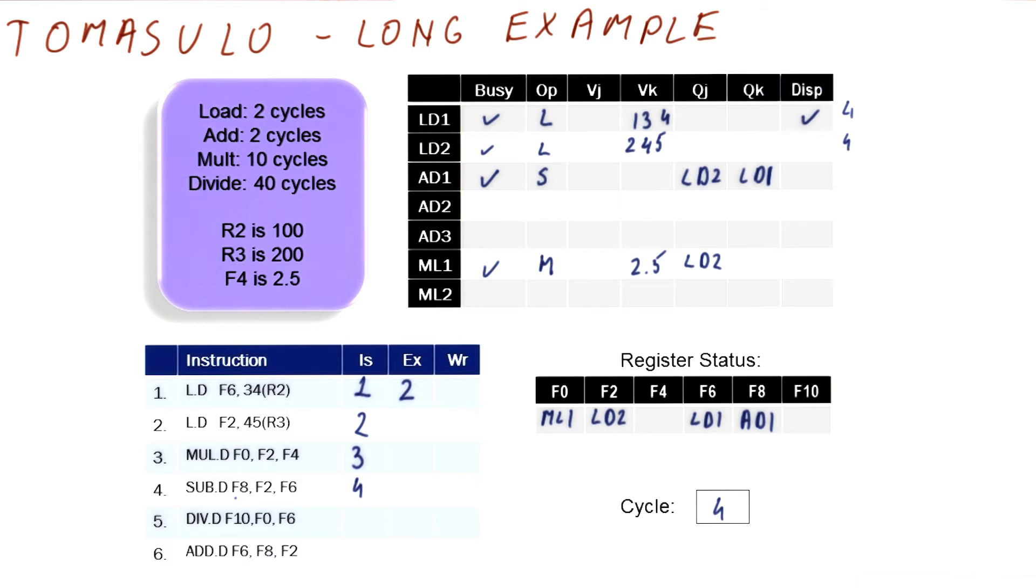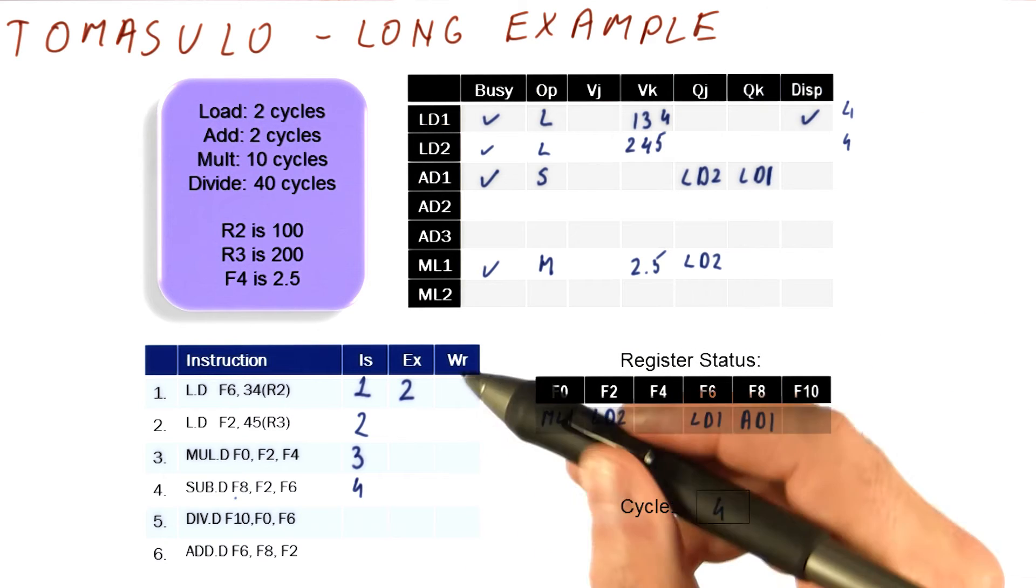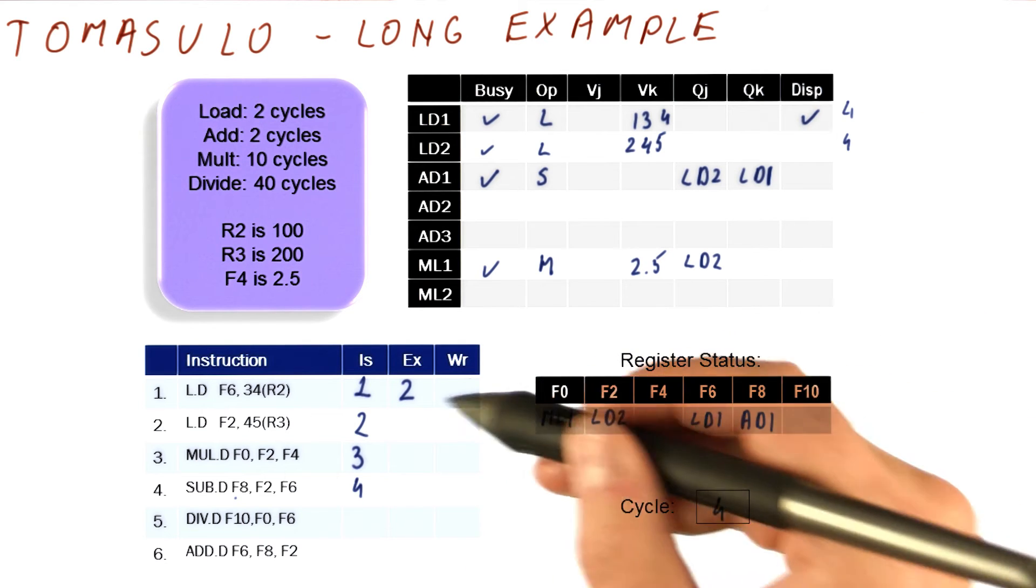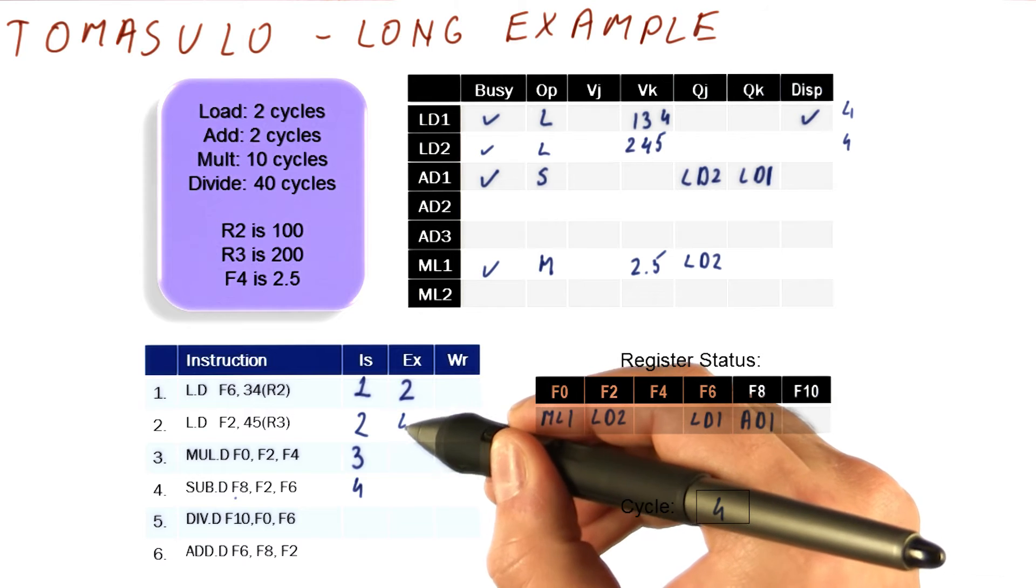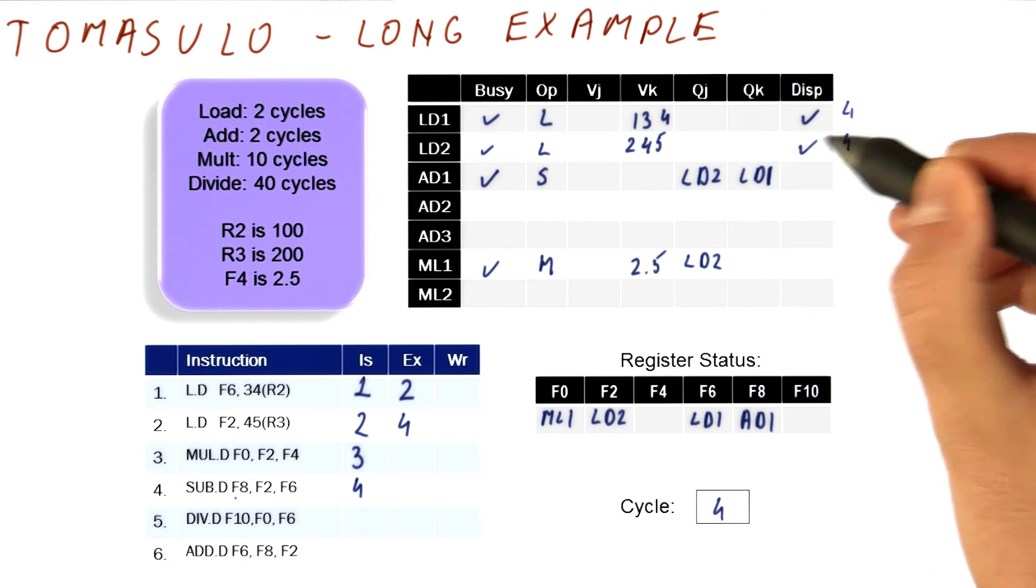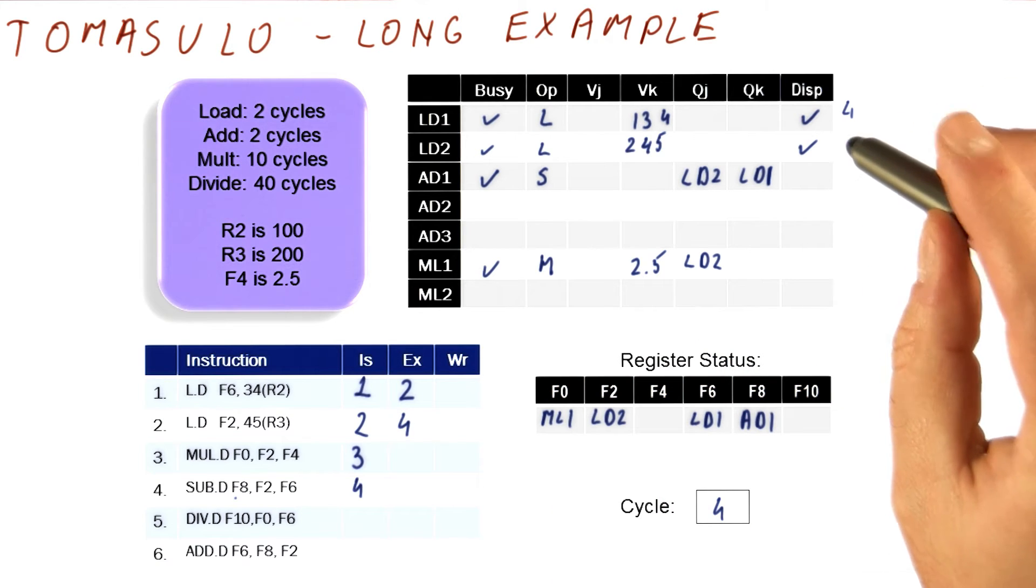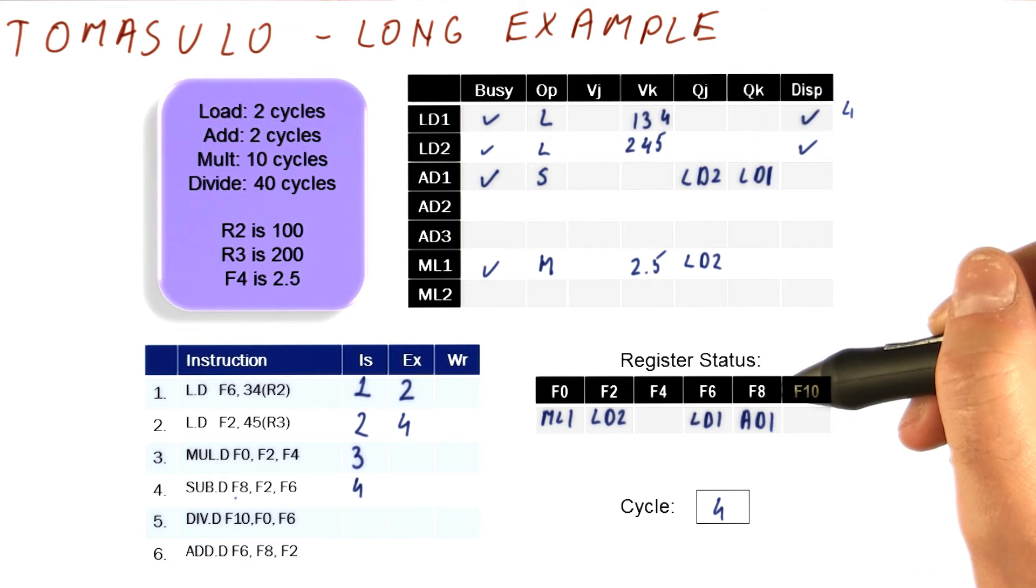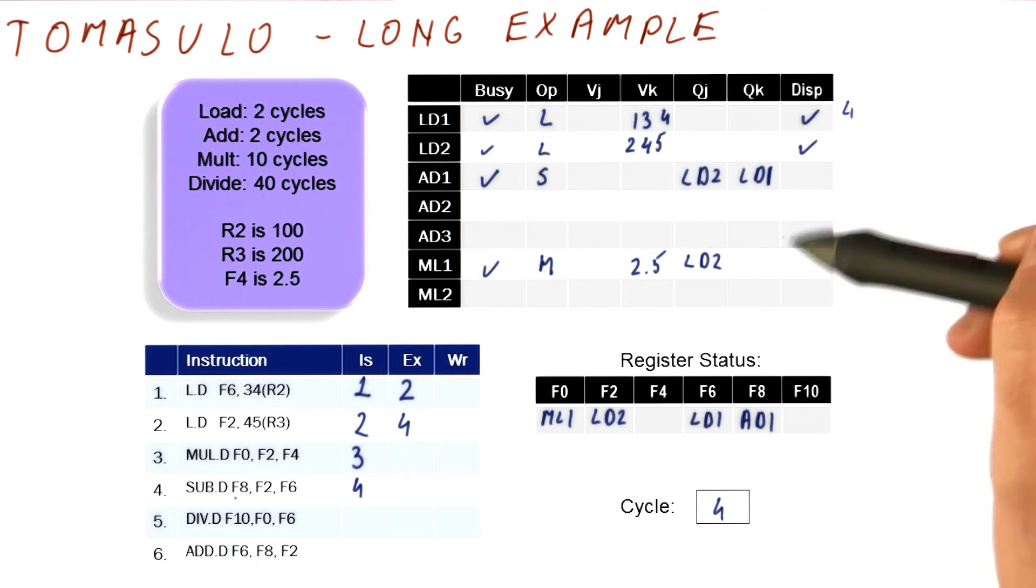Now let's see if we can dispatch something. Well, this is cycle four. In cycles two and three, the first load has been executing. Now it's ready to write. So basically, we can begin execution of this instruction. So it's been dispatched in cycle four. Now we no longer need this. Are any of the other instructions ready to execute? Well, not in this cycle.